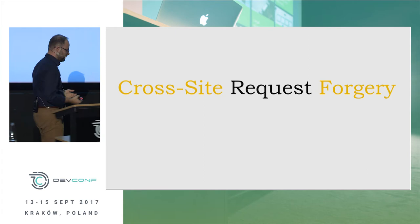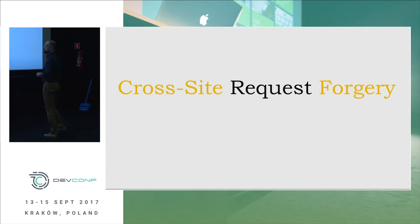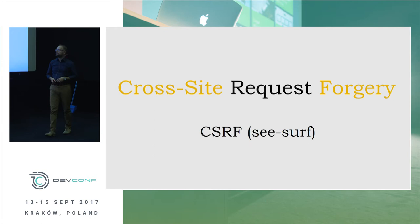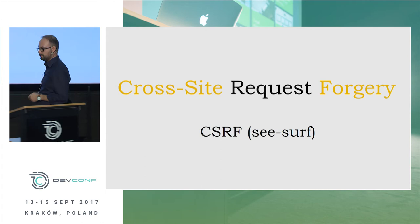Think of it like a deputy holding a gun. If an attacker wants to use that gun, they have two ways: stealing it, or tricking the deputy into using it in the attacker's favor. In computer security, this is known as the confused deputy problem, where a privileged entity is tricked into doing actions of the attacker's liking. In web applications, the loaded gun is the authenticated web browser, and the implementation of this problem is known as cross-site request forgery — abbreviated CSRF or CSRF.